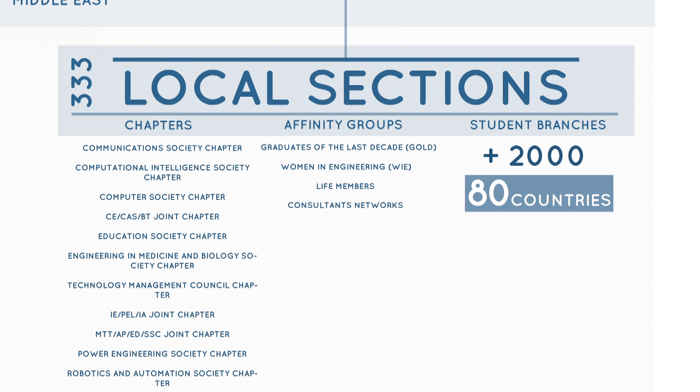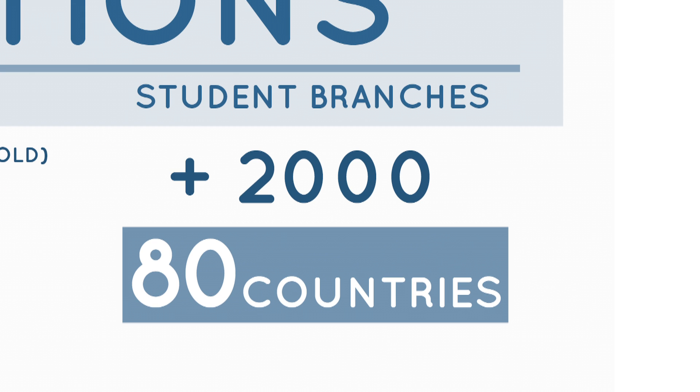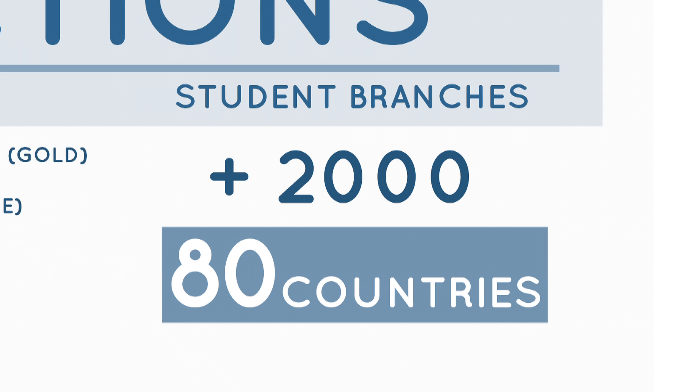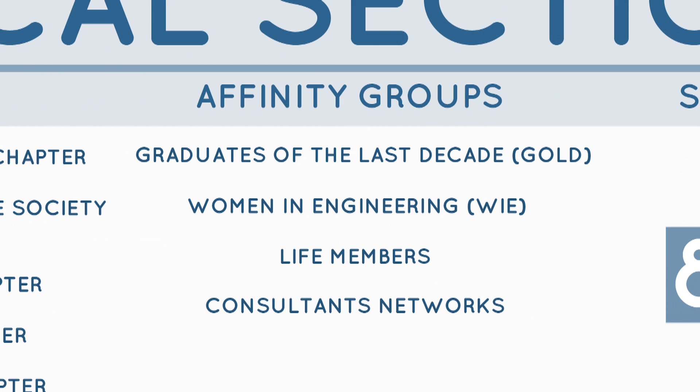In the ten regions there are 333 local sections where members pool their energies to launch and coordinate activities. Student branches are an important part of local sections — they are student groups dedicated to bringing up activities related to engineering and technological innovation. There are more than 2,000 student branches in about 80 countries, which shows how relevant this component is for IEEE. Besides student branches, local sections may include affinity groups, which are non-technical units dedicated to support and coordinate special purpose initiatives. There are presently more than 530 of those initiatives.